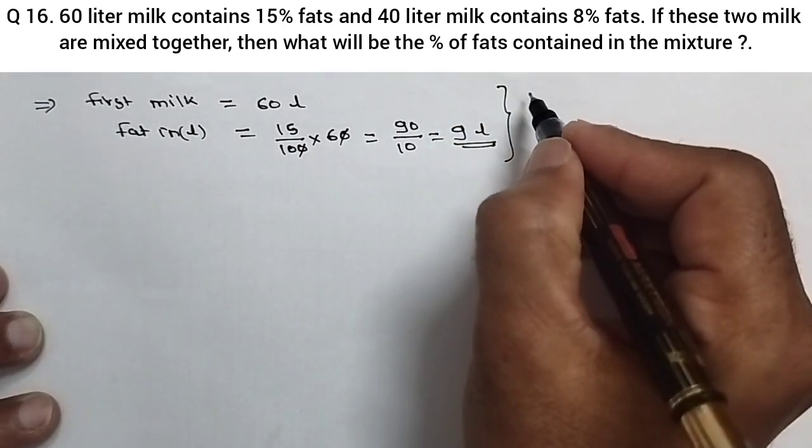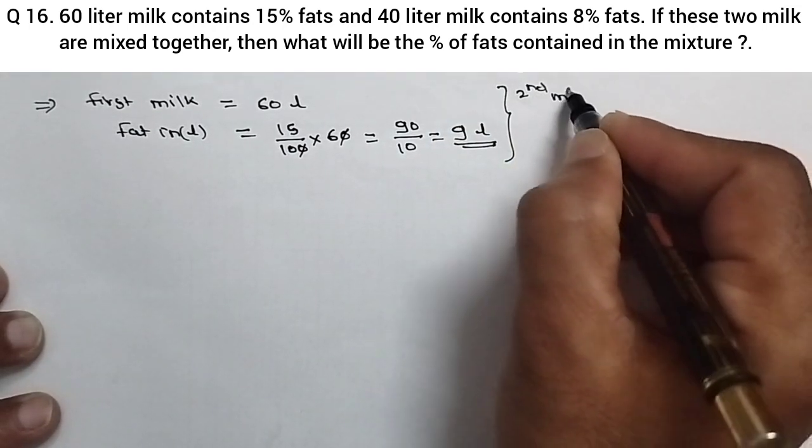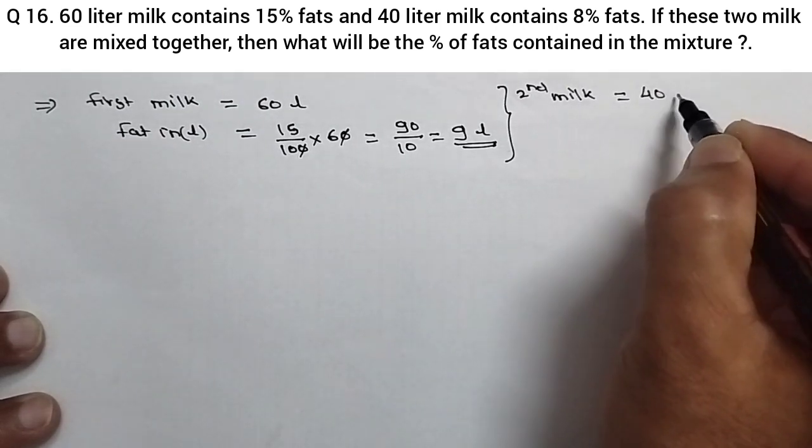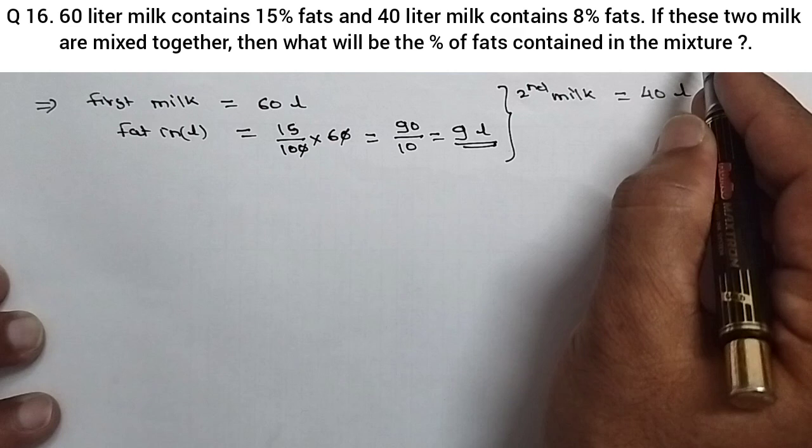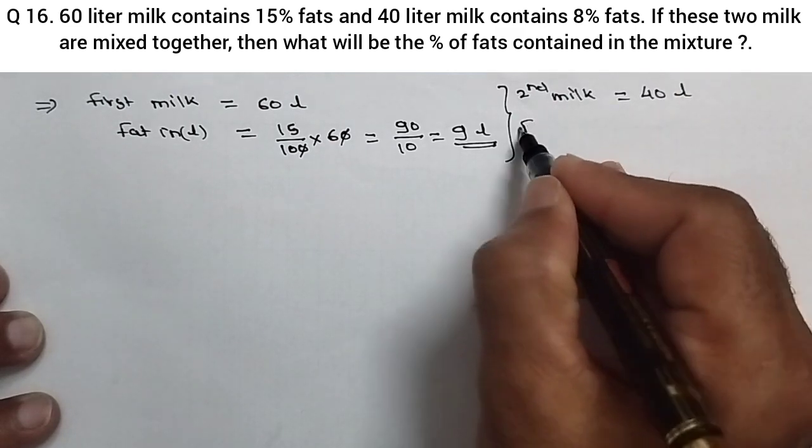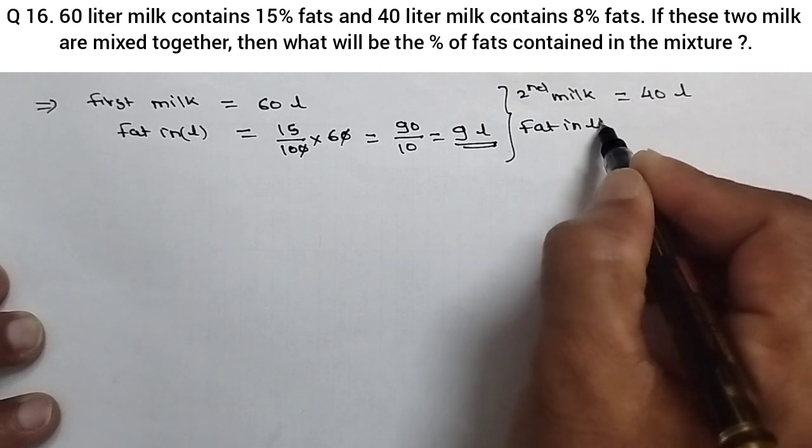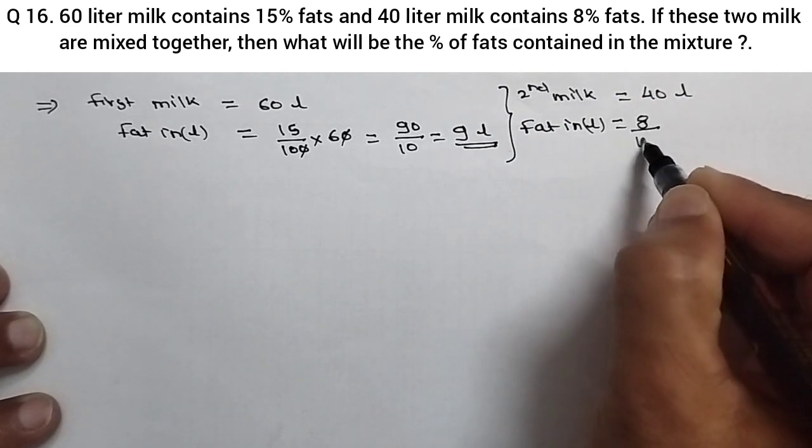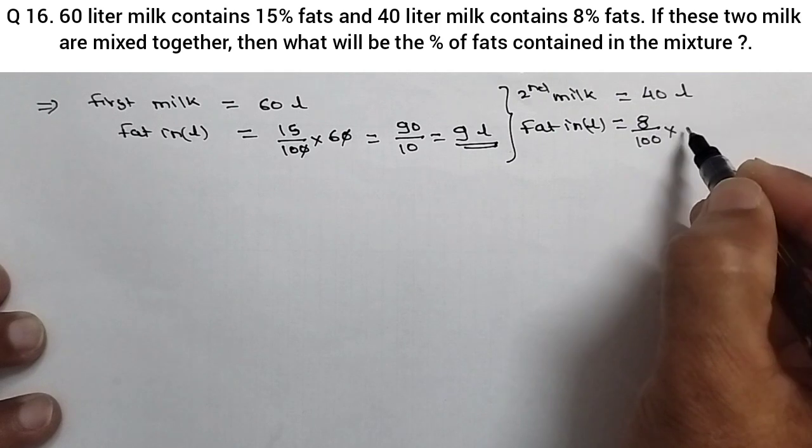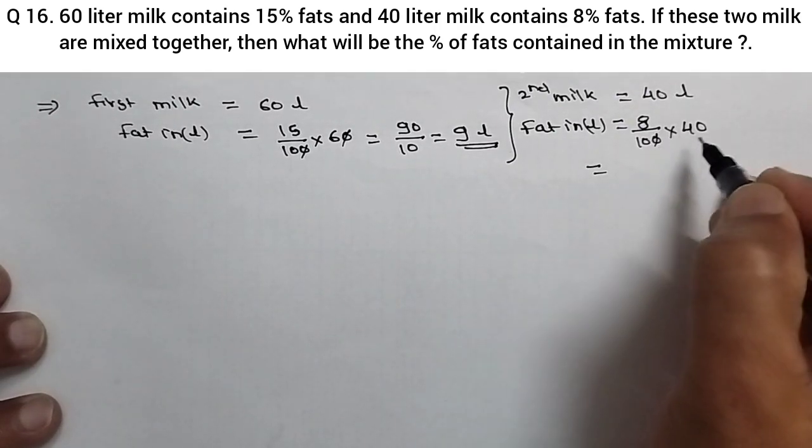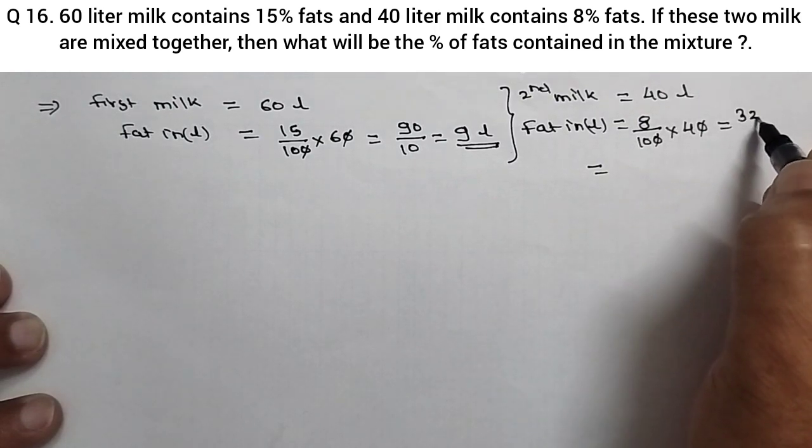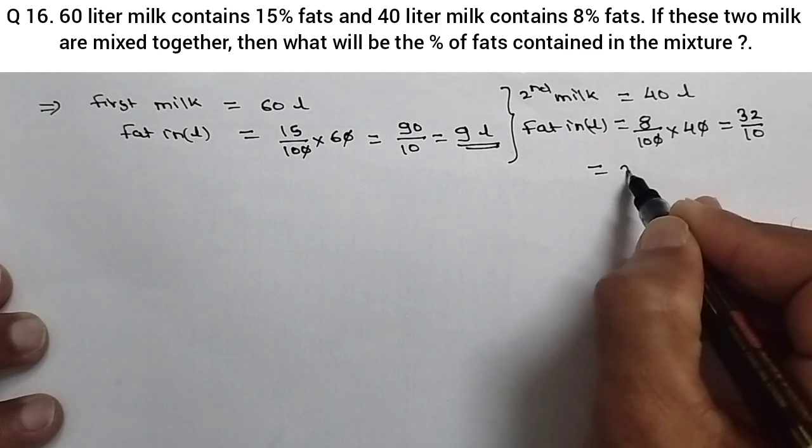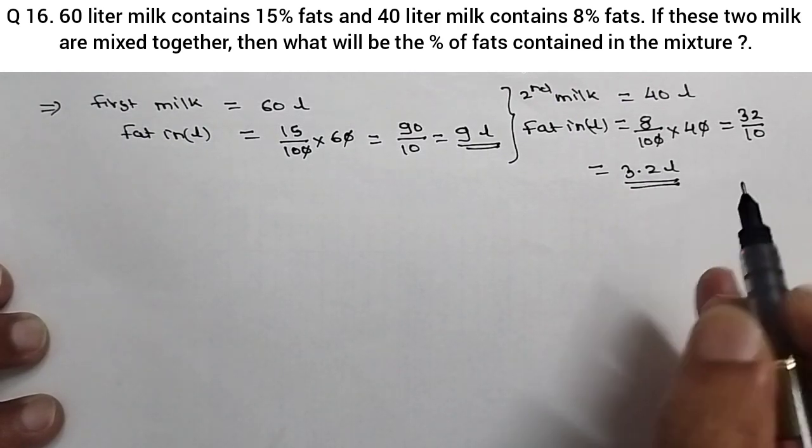Now see here, another milk, second milk. Second milk quantity is 40 liter and fat content is 8%, 8% means if the milk is 100 liter, then 8 liter will be the fat. So here, fat in liter for this milk, that will be equal to 8 upon 100 into 40. Simple calculation, this 00 will get cancelled, 8 into 4, 32 upon 10, that will be 3.2 liter.